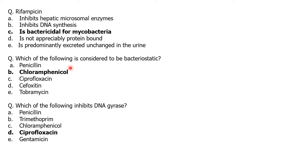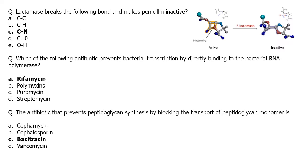Which of the following is considered bacteriostatic — penicillin, chloramphenicol, ciprofloxacin, or tobramycin? The answer is chloramphenicol, which is bacteriostatic. Next: which of the following inhibits DNA gyrase — penicillin, trimethoprim, chloramphenicol, ciprofloxacin, or gentamicin? The answer is ciprofloxacin, which inhibits DNA gyrase.